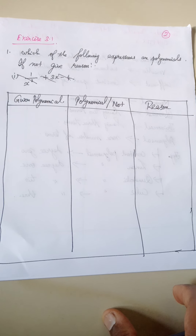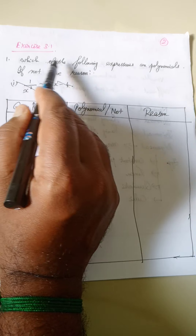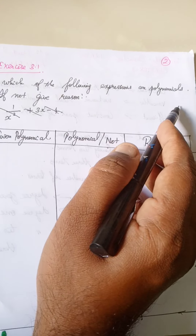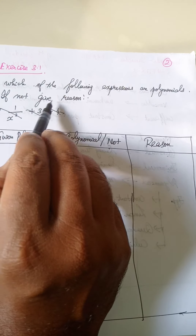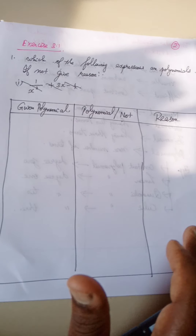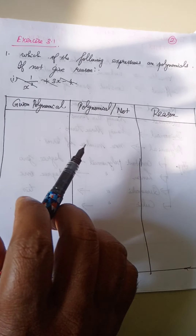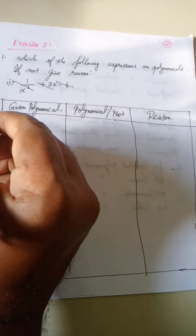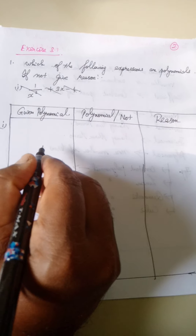In exercise 3.1, we are going to see which of the following expressions are polynomials. If not, give the reason. So first, what we need to write is whatever the polynomials in the book, whatever questions they have given, we need to write the first polynomial.